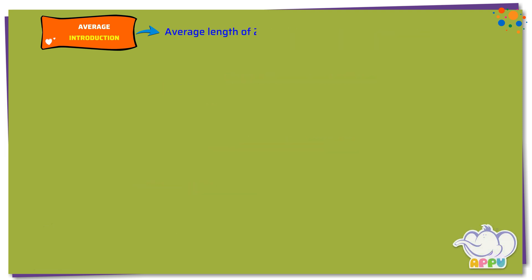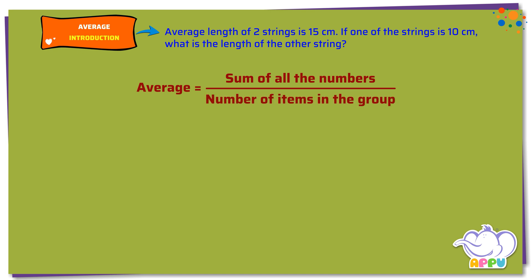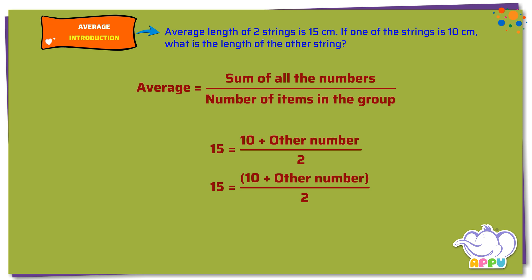Average length of two strings is 15 centimeters. If one of the strings is 10 centimeters, what is the length of the other string? We know that average equals sum of all the numbers by number of items in the group. We know the average is 15. We also know that one of the numbers is 10 and the other number is unknown. Number of items in the group is 2. 15 equals 10 plus other number by 2.